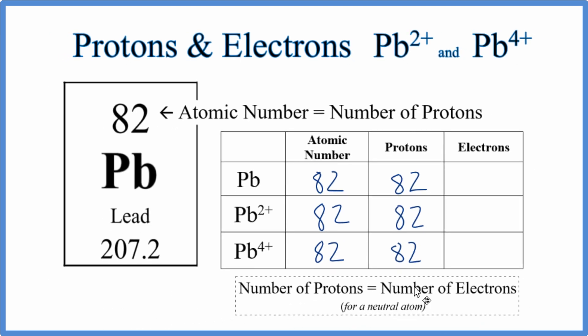On the periodic table, when we have a neutral element, all the elements on the periodic table listed, they're neutral. The number of protons equals electrons. We don't have a negative or a positive, so we know that this is neutral. So the number of protons equals the number of electrons. 82 protons, 82 electrons.